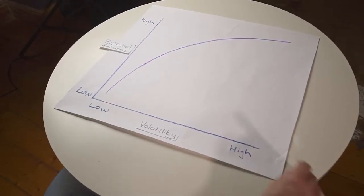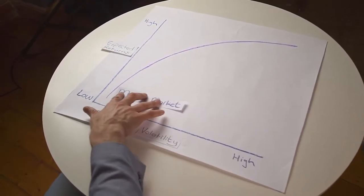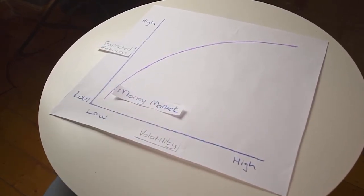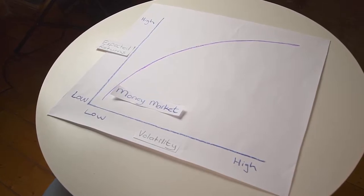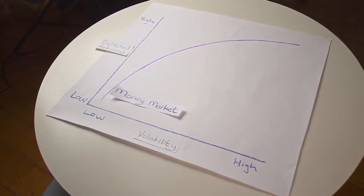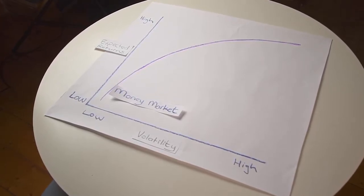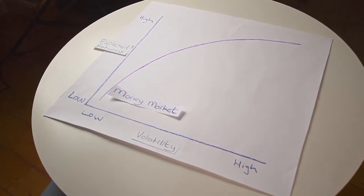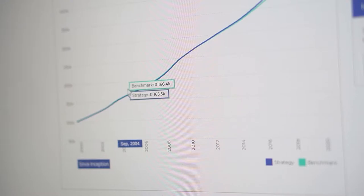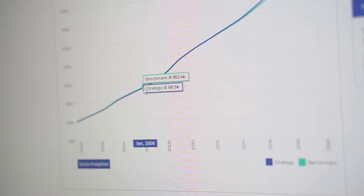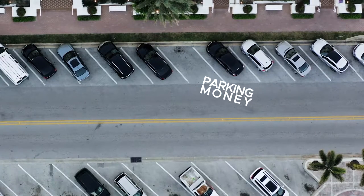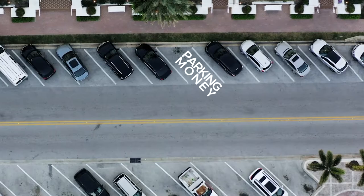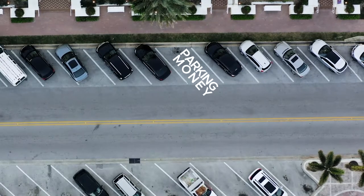The first asset class is money markets. With money markets, your returns are linked to interest rates — if interest rates rise, so will your investment returns. It's extremely low risk and offers stable returns. This is perfect to park your money for about 12 months.